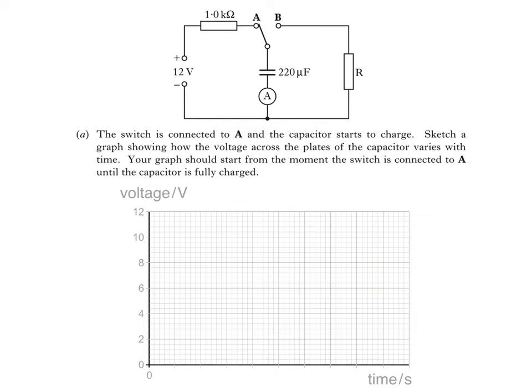The voltage across the capacitor increases from 0 volts to the supply voltage, 12 volts in this case, as it charges. Our graph should look like this. In this circuit the capacitor is fully charged when the voltage across it equals the supply voltage of 12 volts.